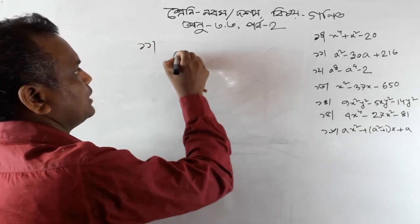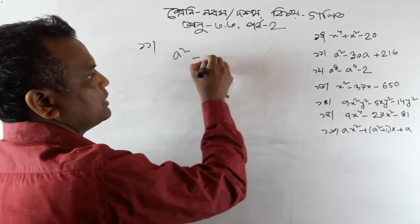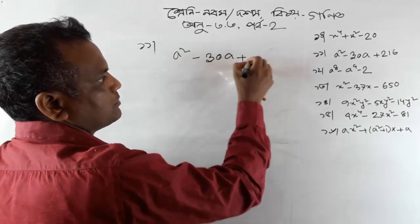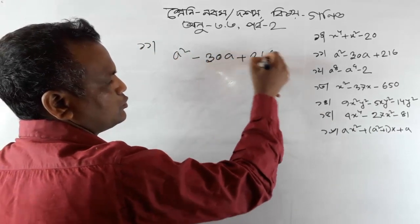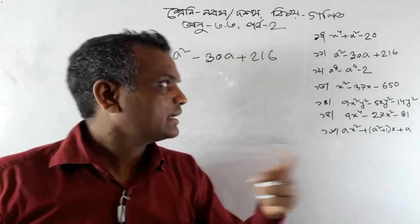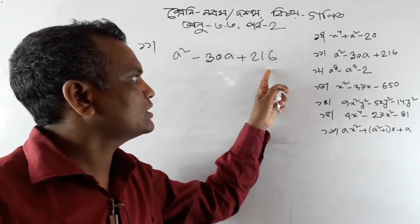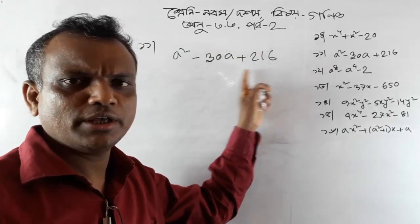a squared minus 30a plus 216. Be careful using the powering.